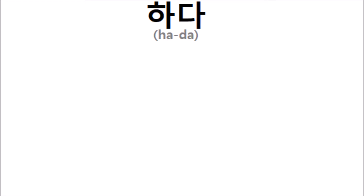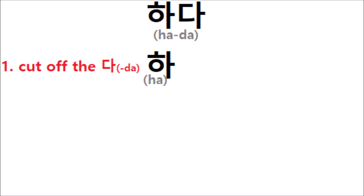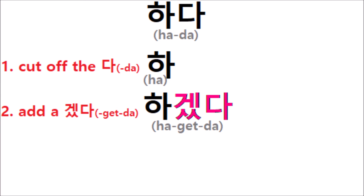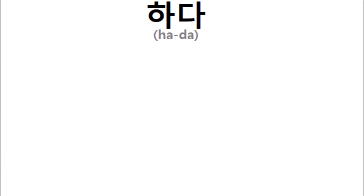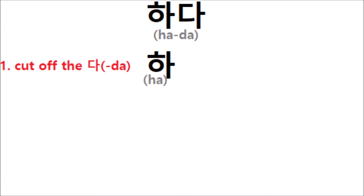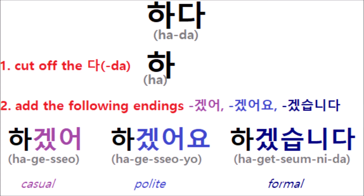So, let's review. Step 1: cut off the da. Step 2: add getta. Step 3: conjugate getta using the simple present tense conjugation rules. Alternatively, if you're not comfortable with those rules, you can cut off the da and add the following endings directly: gettsu, gettsu-yo, gettsum-ni-da.